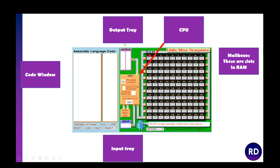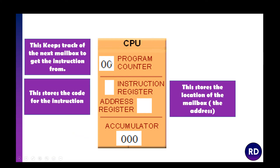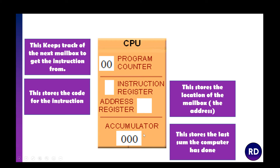In the emulator we've got the code window, the output tray, the input tray, and the CPU itself. The little boxes are called mailboxes, which are slots in RAM. In the CPU you've got the program counter, which keeps track of the next mailbox to get the instruction from, plus the instruction register, address register, and accumulator. This emulator doesn't break down the memory data register separately — you've essentially got the address register acting as the MAR, and the instruction register instead of an MDR, which stores the code for the instruction. The accumulator stores the result of the last operation performed.